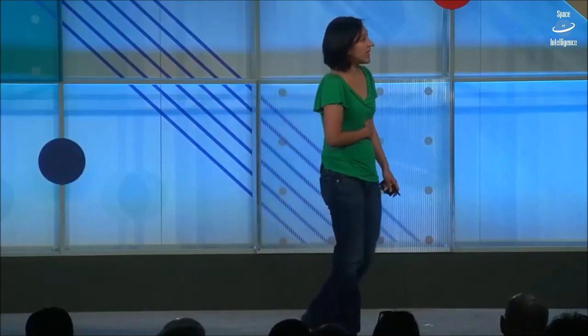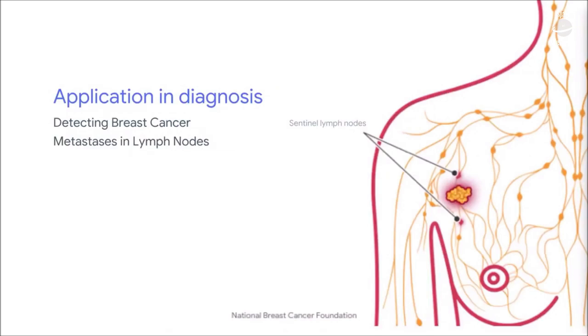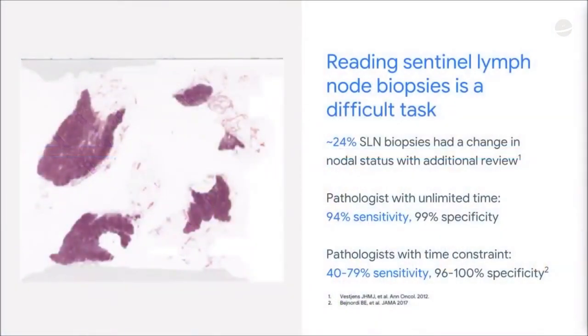Here's an application in diagnosis that we're working on — specifically, metastases of breast cancer into nearby lymph nodes. When a patient is diagnosed with breast cancer and the primary cancer is removed, the surgeon takes out lymph nodes so we can examine whether the cancer has metastasized into those nodes. That has an impact on how you treat the patient.